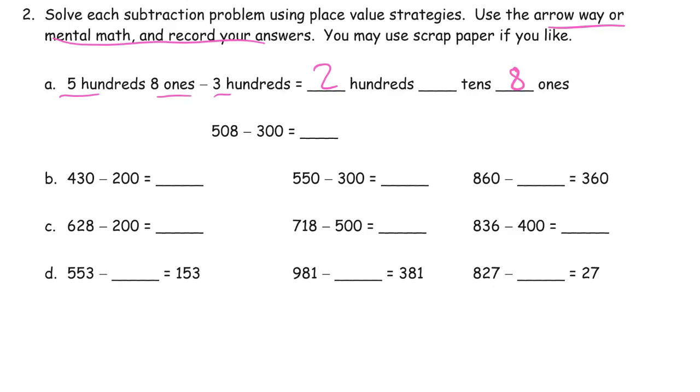And we still get to keep the eight ones. But there's no tens in this number here. There's no tens in our minuend. Zero tens. We didn't subtract any. 508, this is the 508. And this is the 300. It's 208.